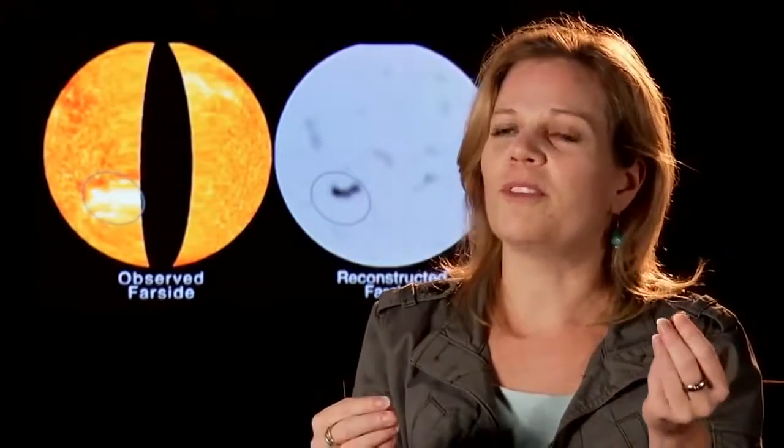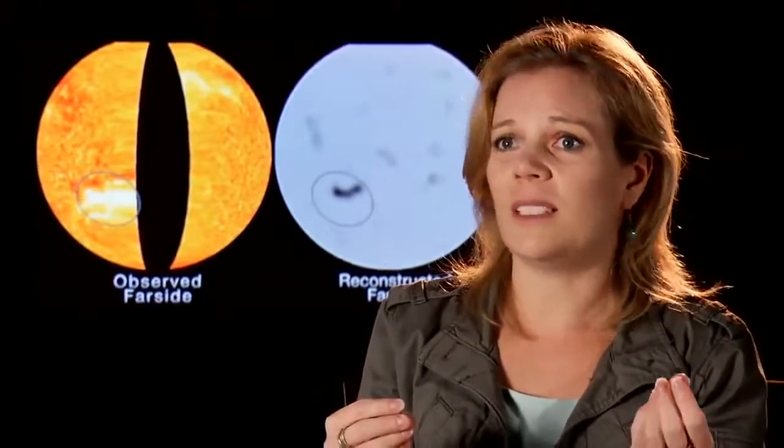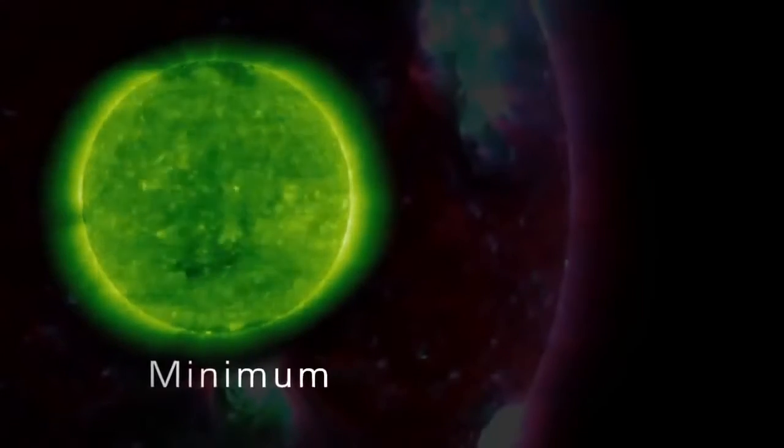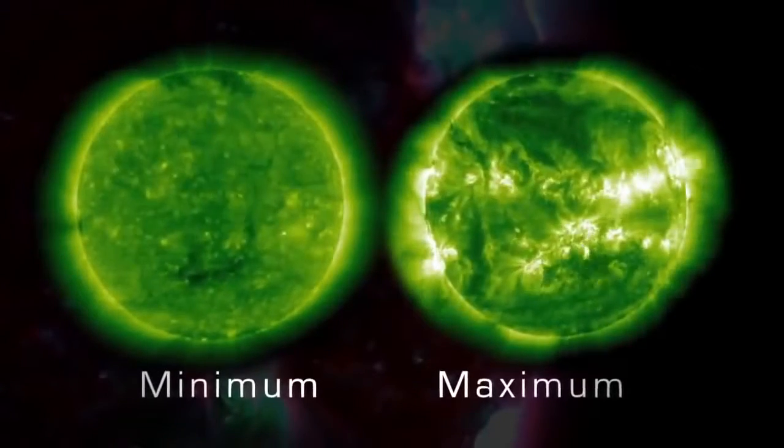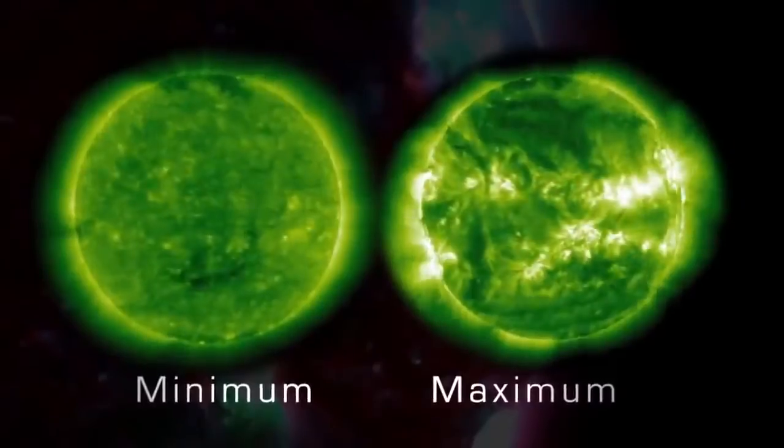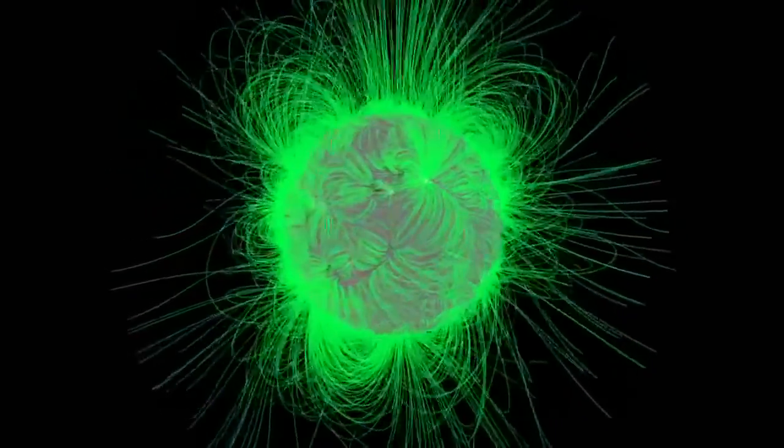The Sun goes through what we call a solar activity cycle, where every 11 years on average it will go from a very low period of solar activity, meaning sunspots and solar storms, to another period of low activity. In between, it goes through what we call solar maximum. At solar maximum, the Sun has a very complicated magnetic field structure, and therefore it creates a lot more sunspots and a lot more solar storms like flares and CMEs.